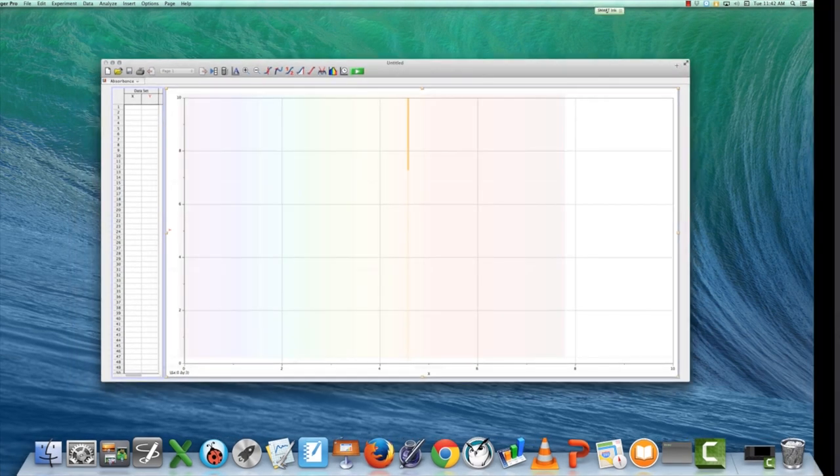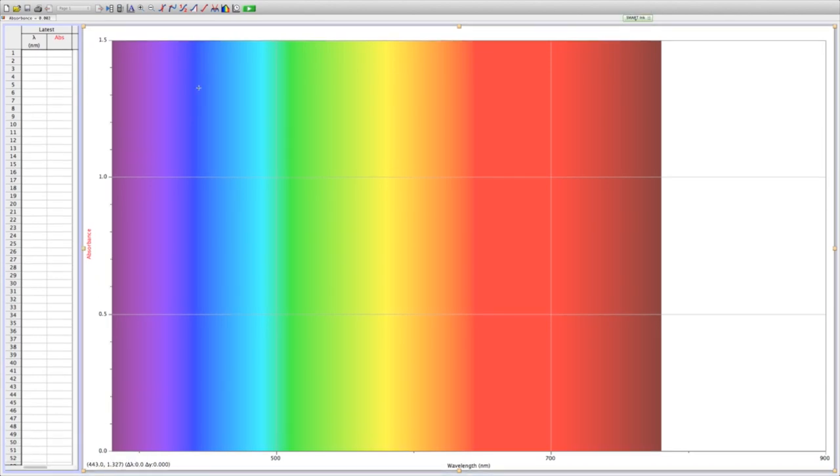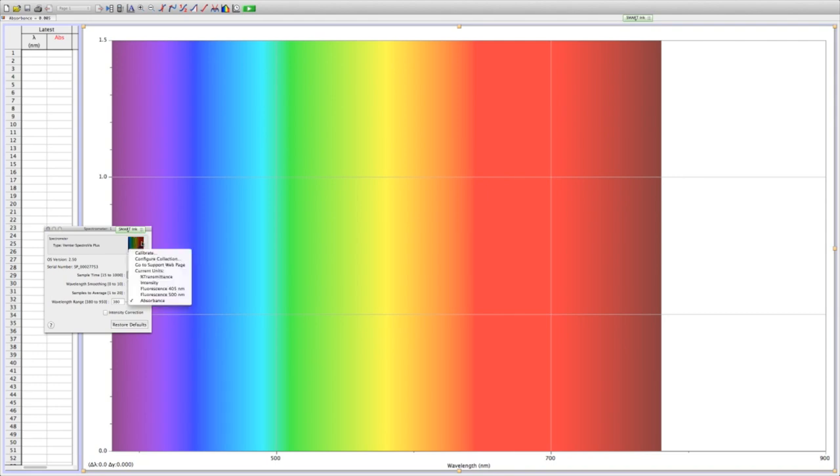In the upper left-hand corner of the screen, you will find the word absorbance with a picture of a rainbow in a box. Click on the absorbance box. A text box will pop up with another rainbow box. Click on it. On the drop-down menu, click Calibrate.